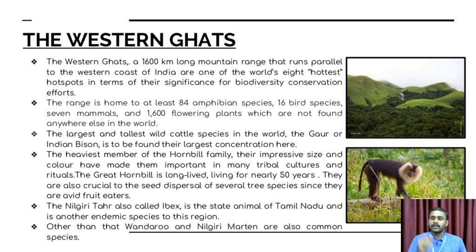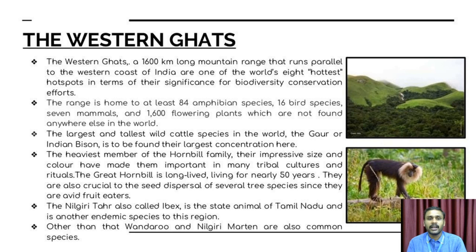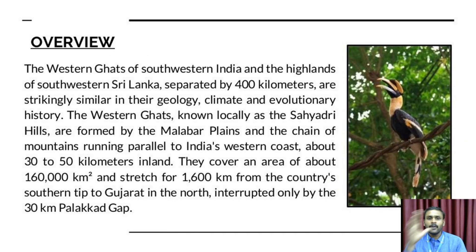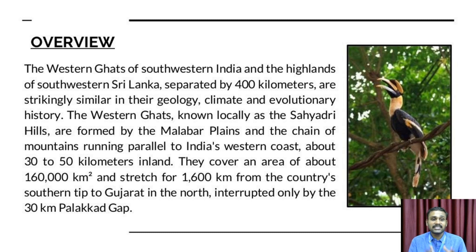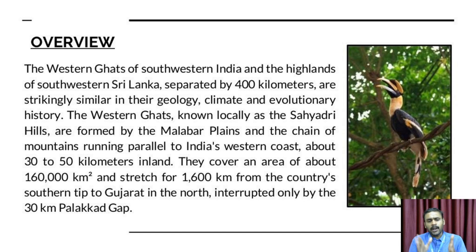The Western Ghats is home to the state animals of Tamil Nadu. Species like the Nilgiri Martin are common here. The western coast runs along the southwestern part of India and down through Sri Lanka. The range, separated by about 400 kilometers and similar in geological, climatic, and evolutionary history, is known locally as the Sahyadri Hills, bordered by the Malabar plains in the Kerala region. They cover an area of 160,000 km², stretching 1,600 km from Gujarat in the north to the country's southern tip.